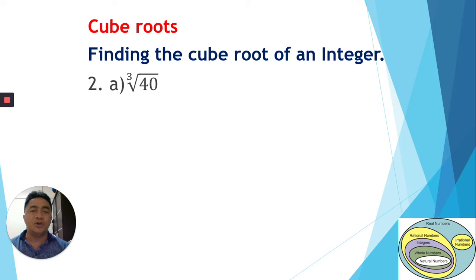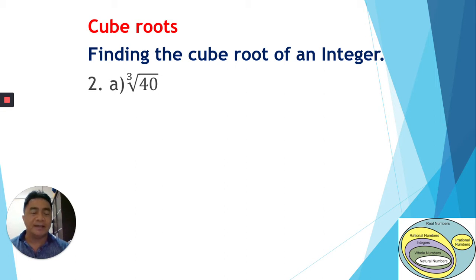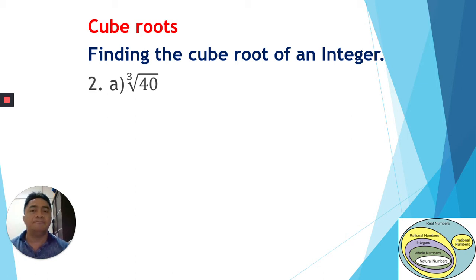First, we have finding the cube root of an integer. Our first example, taken from your workbook, is the cube root of 40. Now, 40 is an integer. For cube roots, like with square roots where we need an exponent of 2, here we need power 3. So we find any factor that can be made into a power of 3. The factors of 40 include 8 and 5, and 8 can be written as 2 to the power of 3.